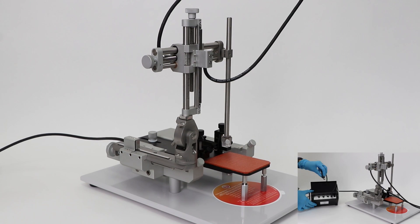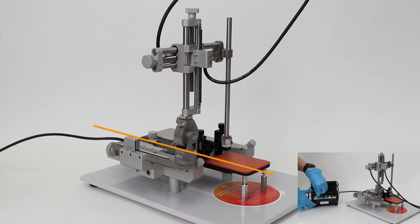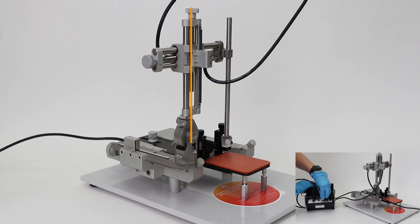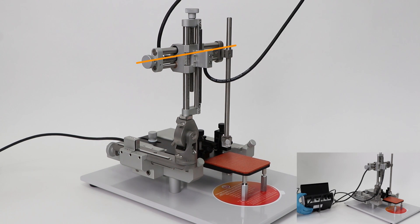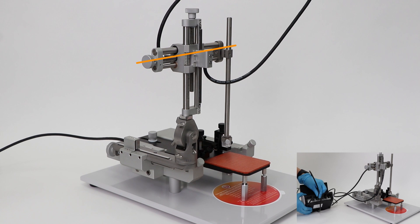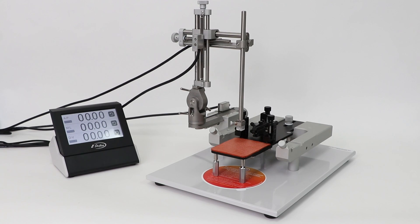Take the cables attached to your anterior posterior, dorsal ventral, and medial lateral axes and plug them into the corresponding cords on the digital display. Your stereotaxic manipulators are now integrated with your digital display.